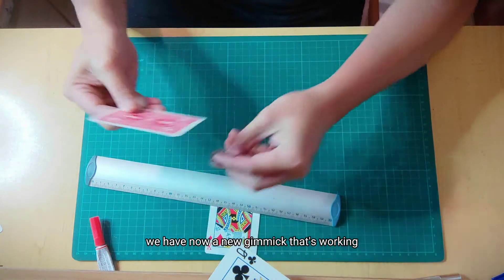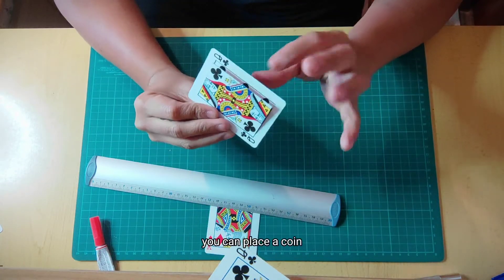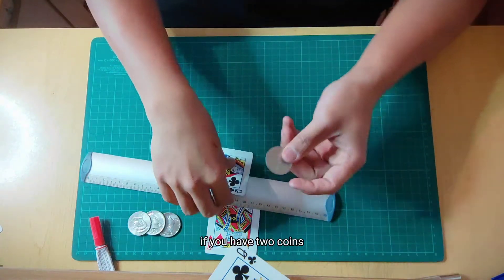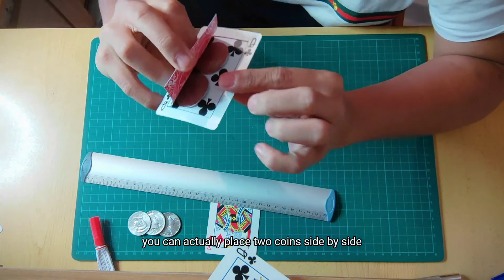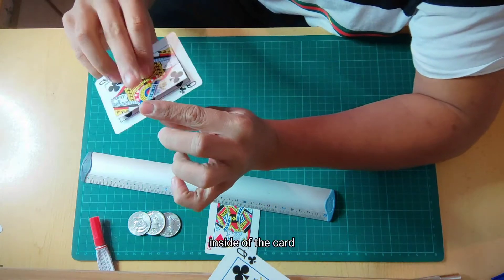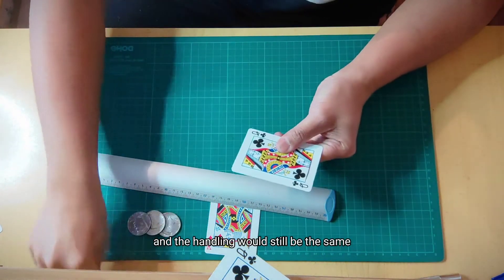We have now a new gimmick that's working. You can place a coin. If you have two coins, you can actually place two coins side by side inside of the card. And the handling would still be the same.